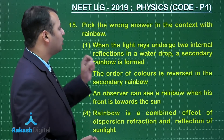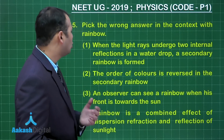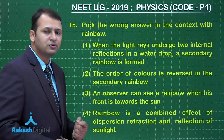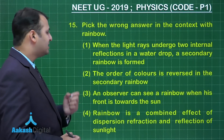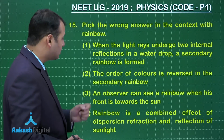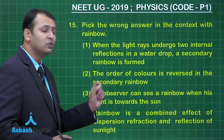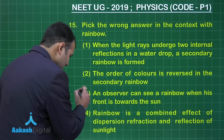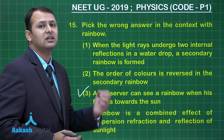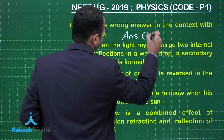The question asks to pick the wrong answer in context with a rainbow. Option 1: when light rays undergo two internal reflections in a water drop, a secondary rainbow is formed — this is correct. Option 2: the order of color is reversed in the secondary rainbow — also correct. Option 3: an observer can see a rainbow when his front is towards the sun — this is the incorrect statement, because a person cannot see a rainbow when the sun is in front of him. So the answer is option number 3.